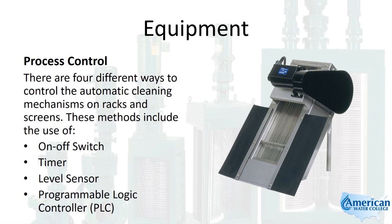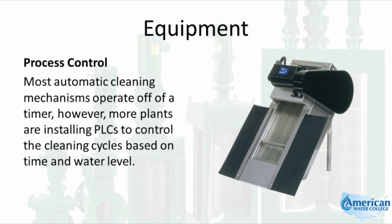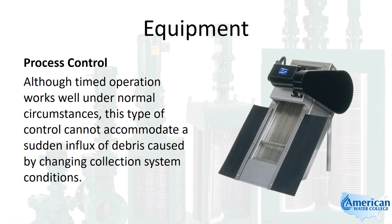There are four different ways to control the automatic cleaning mechanisms on racks and screens: an on-off switch, a timer, a level sensor, and programmable logic controllers. Most automatic cleaning mechanisms operate off a timer; however, more plants are installing PLCs to control cleaning cycles based on both time and water level. Timed operation works well under normal circumstances but can't accommodate a sudden influx of debris caused by changing collection system conditions.